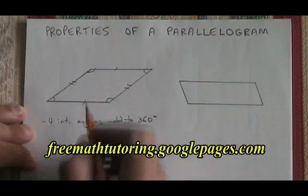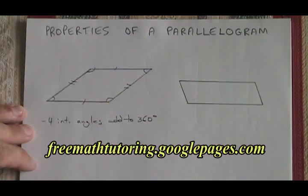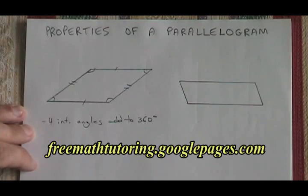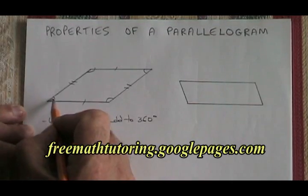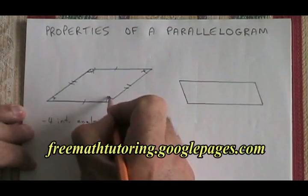They're also parallel. This side is parallel to this one, and this side is parallel to that one. The opposite angles are also congruent. This angle is congruent to this one, and this angle is congruent to this one.